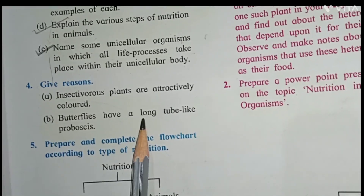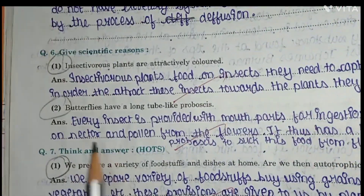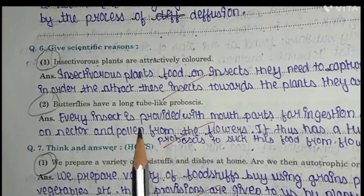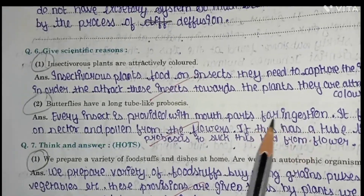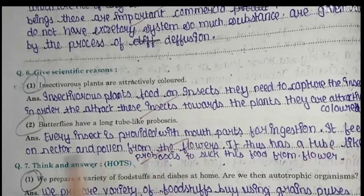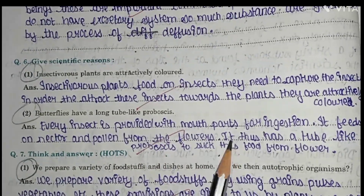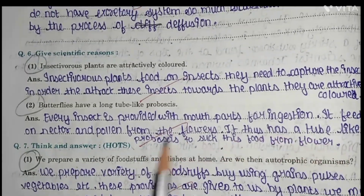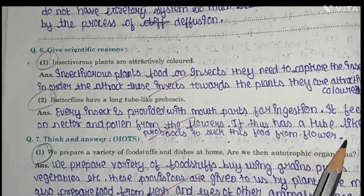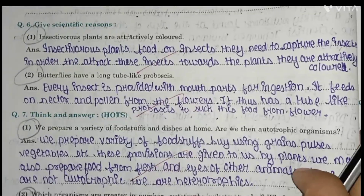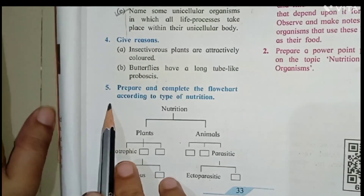Question number two — give reason: butterflies have a long tube-like proboscis. Every insect is provided with a mouth part for ingestion. The butterfly feeds on nectar and pollen from flowers, so it has a tube-like proboscis to suck this food from the flower.